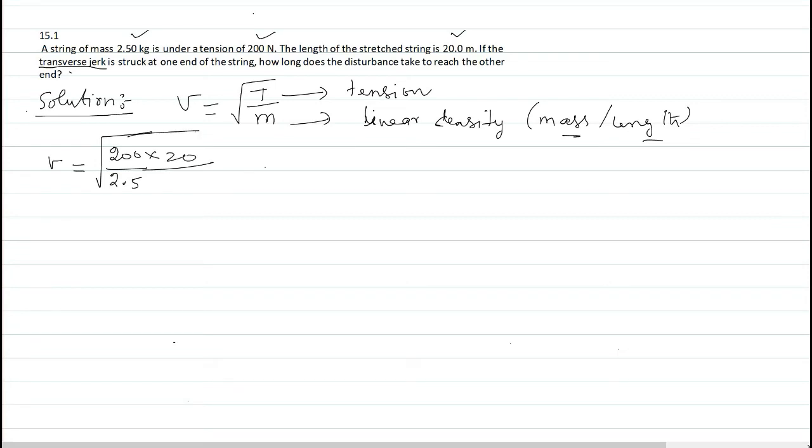Now, this 2.5. This is 200 into 20. This 2.5 you can just write as 5 by 2, that will go here. So, this will be 40. This 20 into 2, so 40 into 40. So, when you take square root, it is just 40 meter per second.